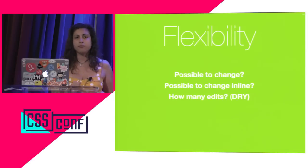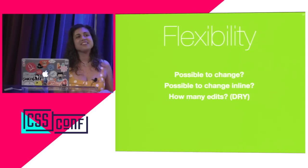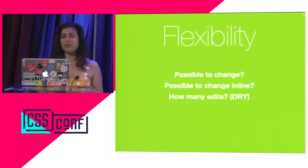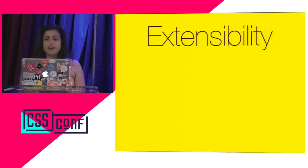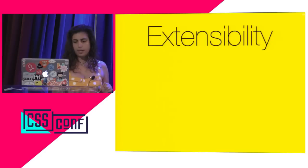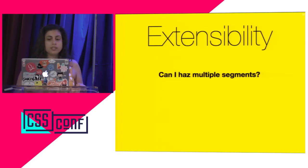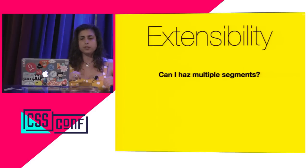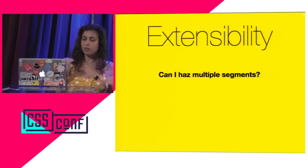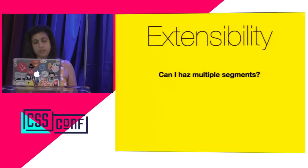Even if something is possible to change, how easy is it? How many changes do I have to make? Do I have to change the color in ten places to get a different color in the pie chart? Do I have to change all sorts of transforms and weird numbers to change the percentage? In software engineering, this is called DRY — don't repeat yourself. And there's actually the opposite that fewer people know, called WET, which stands for two things: 'We enjoy typing' or 'Write everything twice.' I'm sure you've all seen CSS that can be very WET.